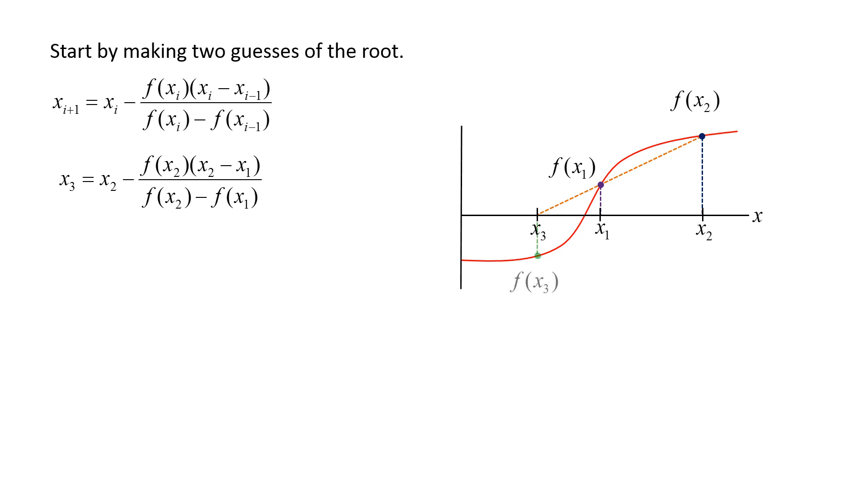Evaluate the function at x3, and use x2 and x3 to calculate x4, which is where the secant line passing through x2 and x3 crosses the x-axis.